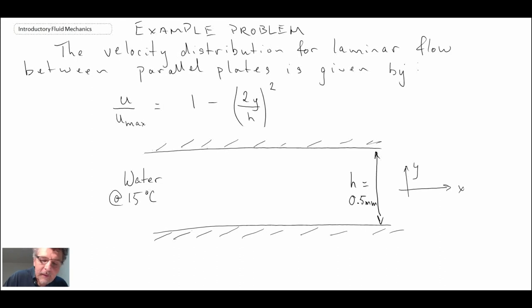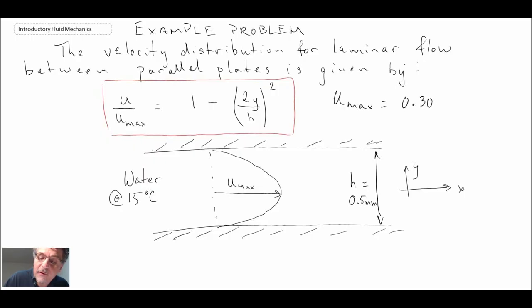We have water flowing with this parabolic profile. This flow is called plane Poiseuille flow. At the centerline we have u_max which appears in the equation. u_max equals 0.30 meters per second.